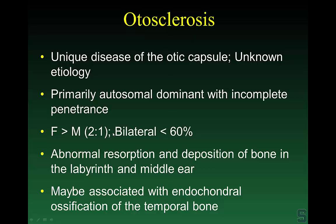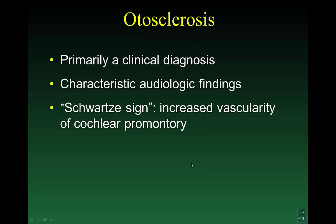The first pathology we'll discuss is otosclerosis — a unique disease of the otic capsule. No one really knows the etiology. It is primarily autosomal dominant with incomplete penetrance, slightly more common in females, and is due to abnormal resorption and deposition of bone in the middle ear. It is still considered a clinical diagnosis, but our imaging has become so good that we're starting to see early bone resorption and deposition, potentially before audiologic findings appear.